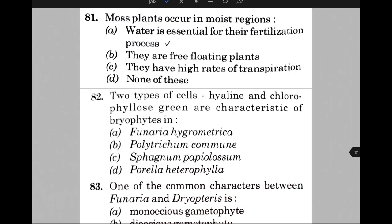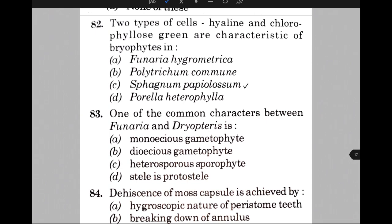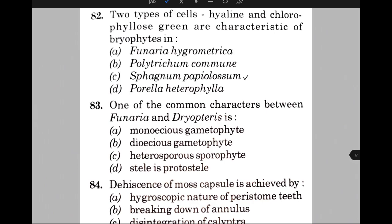One of the common characters between Funaria and Dryopteris is — the answer is option A, that is monoecious gametophyte. Dehiscence of moss capsule is achieved by — the answer is A, that is hygroscopic nature and peristome teeth.